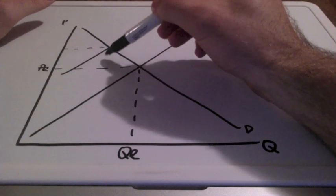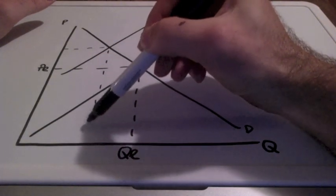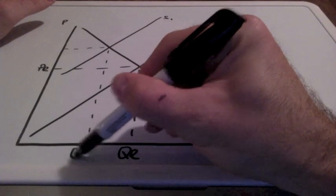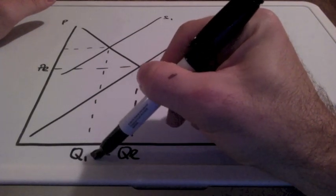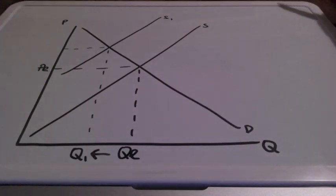Price will increase and quantity will decrease. Well, the government taxes because they want money. We call this tax revenue. So where in this graph would we find tax revenue?